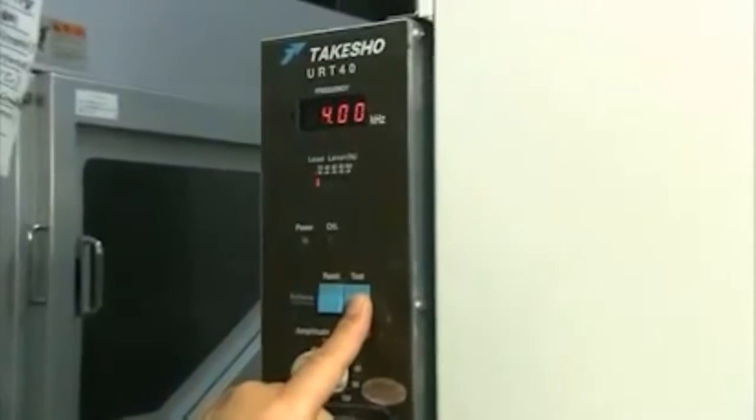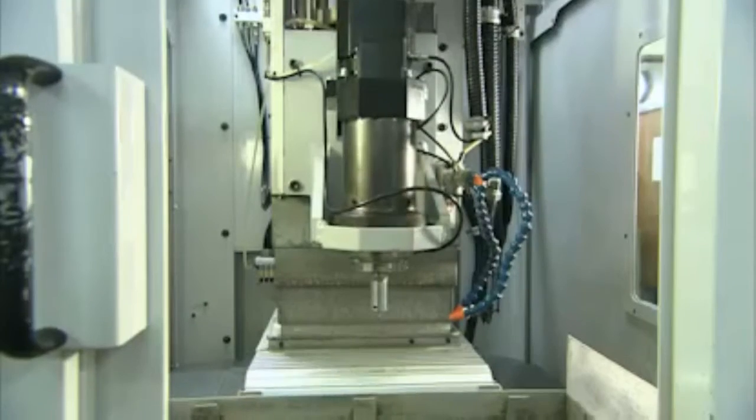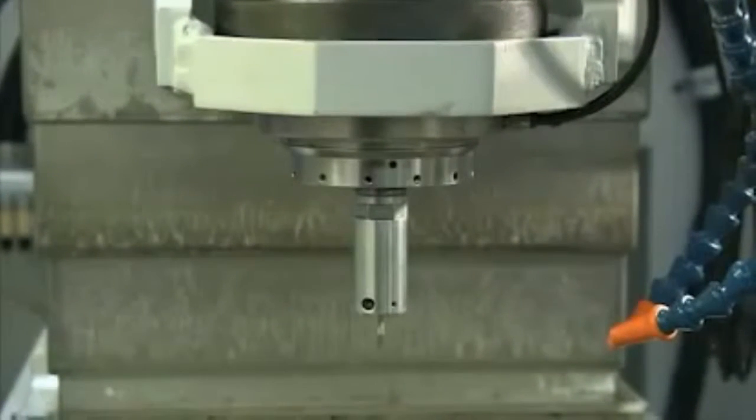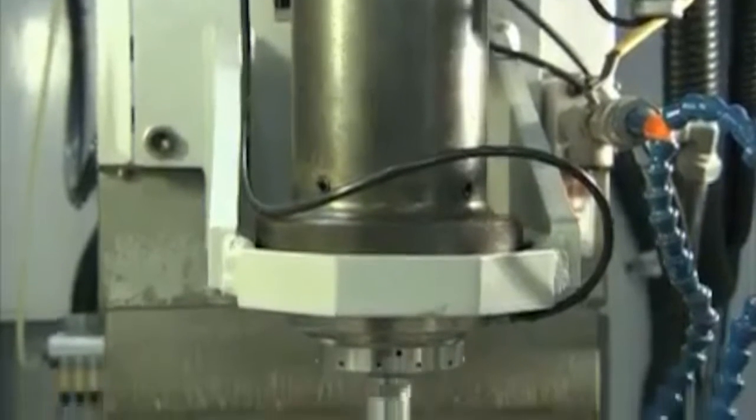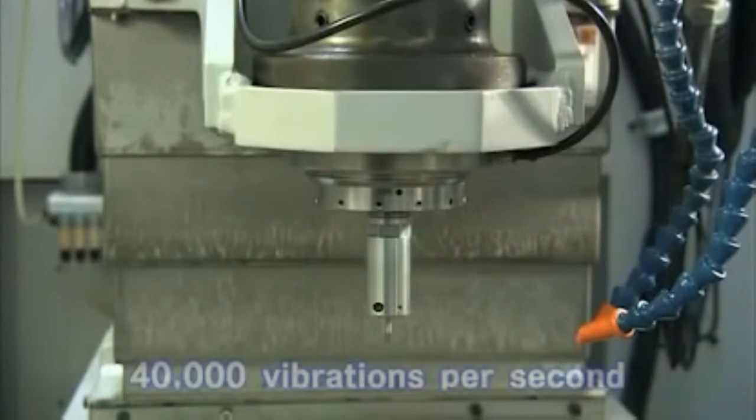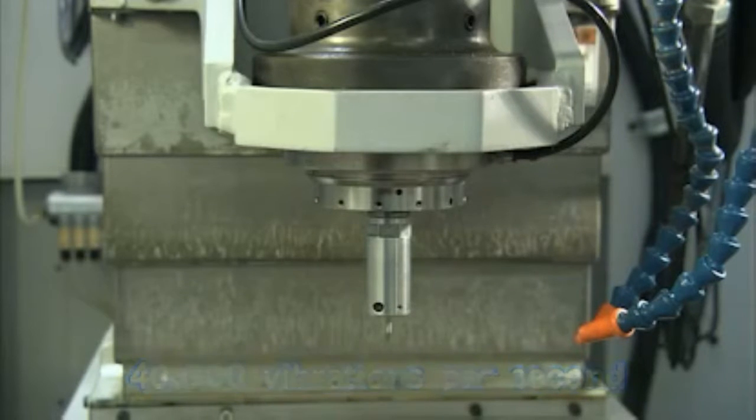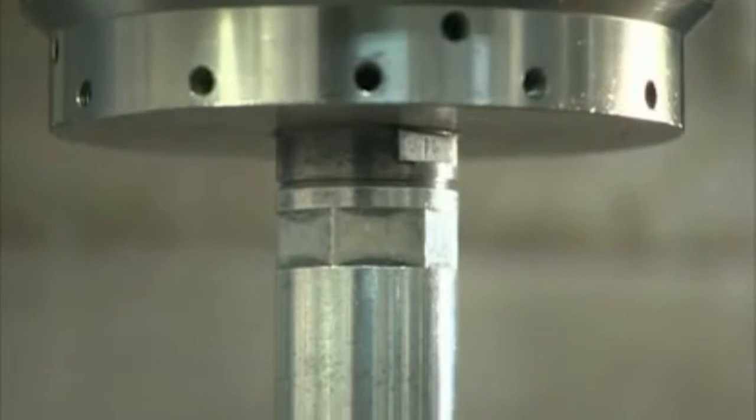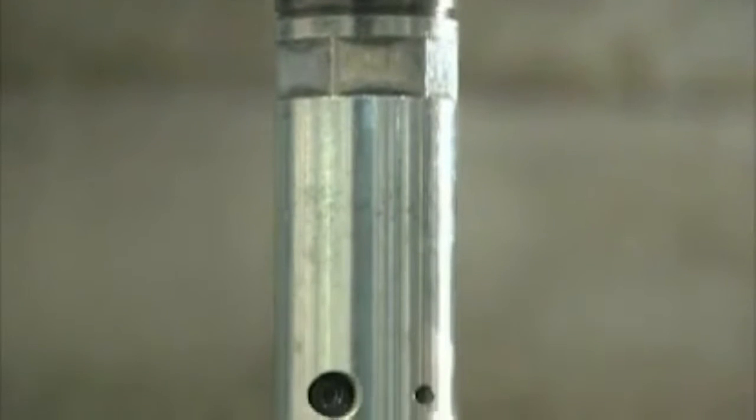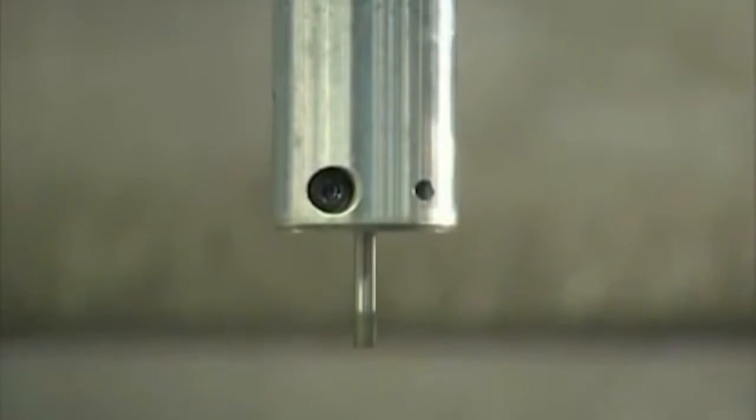He switches on the machine. It doesn't seem to be moving at all. But the machine is in fact vibrating 40,000 times per second. The vibration measures only 2 to 6 micrometers. To a human eye, it seems motionless.